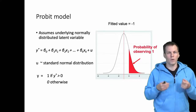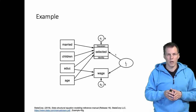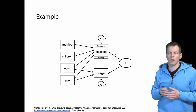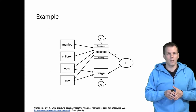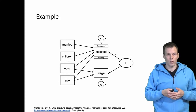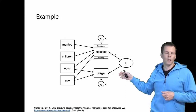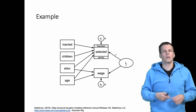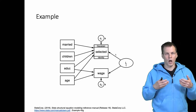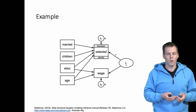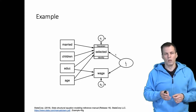Let's get back to the selection model using an example from the Stata user manual. We are explaining the wages of women and how wages depend on education and age. The problem is that if a person was offered a low wage, they would choose not to work — exactly the problem Heckman addressed when developing the selection model. We also have a selection equation: whether a person decides to work depends on whether they're married and whether they have children.